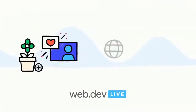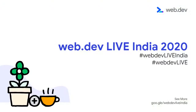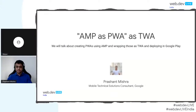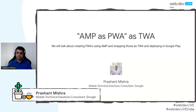Hello everyone, my name is Prashant Mishra. I am a technical consultant with Google. I work with top companies and top sites in India on improving their web properties and on implementation of Fugu APIs and technologies like AMP, PWA, and TWAs. The title of my talk is AMP as PWA as TWA. Apologies for using a lot of acronyms — it's perfectly fine if you are not familiar with any of these.